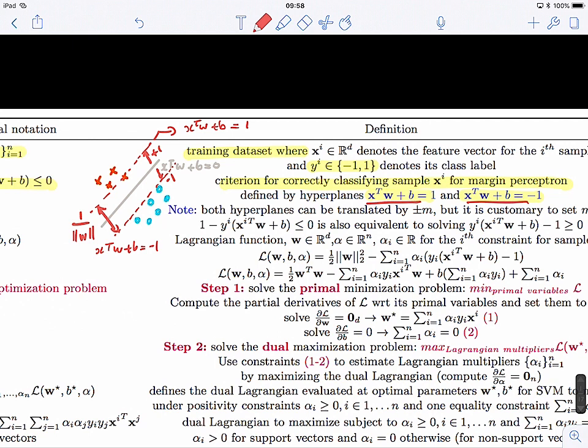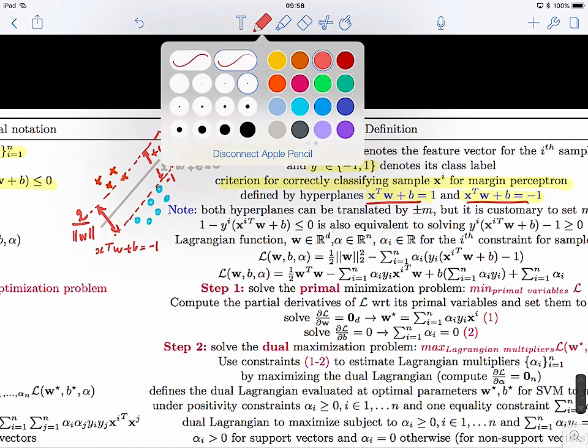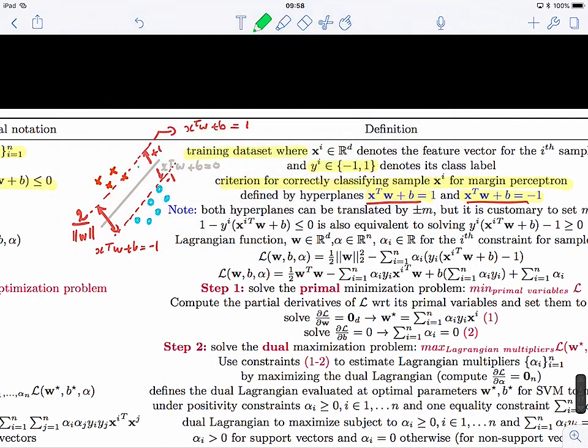But here we have a two, right? So we have two divided by the norm of W, which is the normal vector to the hyperplane. So right there, this will be one divided by the norm of W.